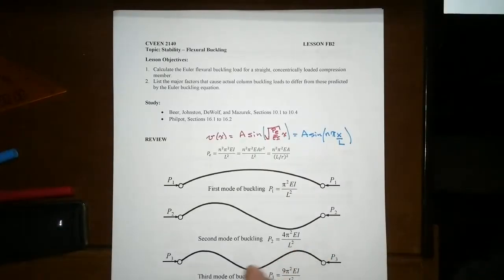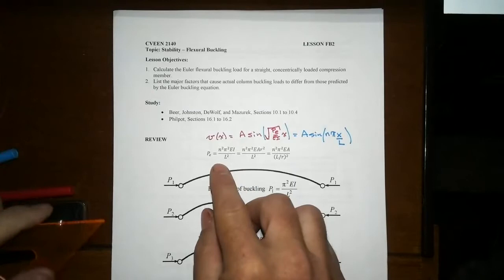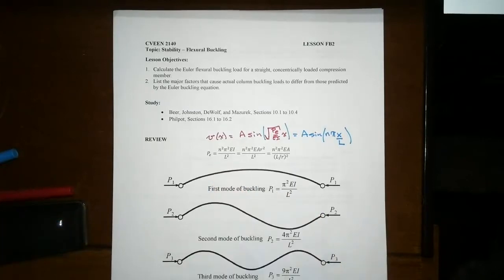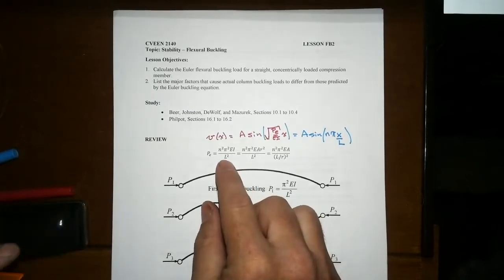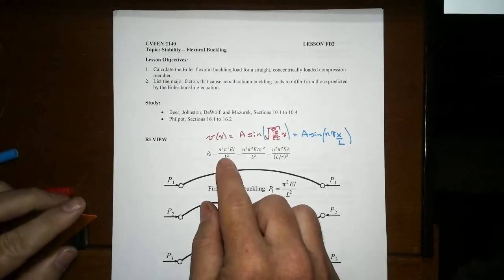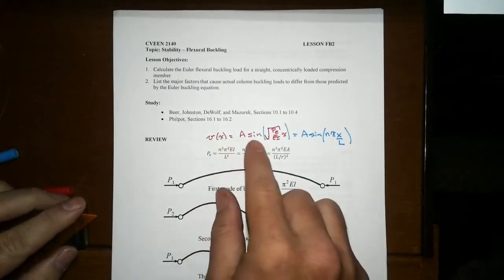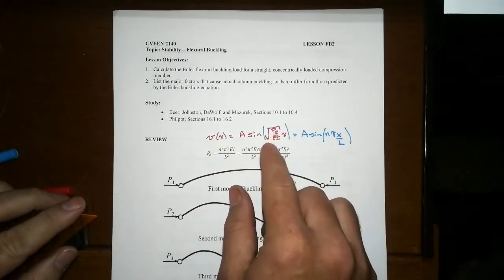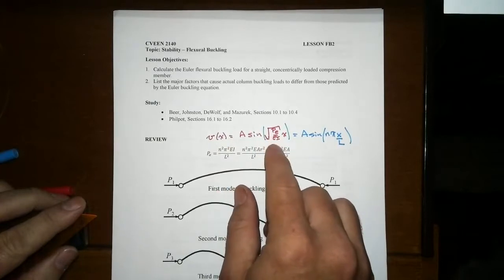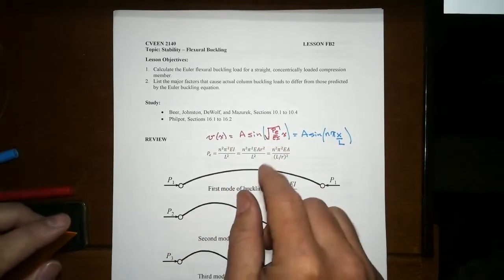There's a lot of important nuances when it comes to this Euler model that we derived in a previous lesson. The general part of that was that your displacement function equals A times sine times the square root of Pcritical divided by EI times x.